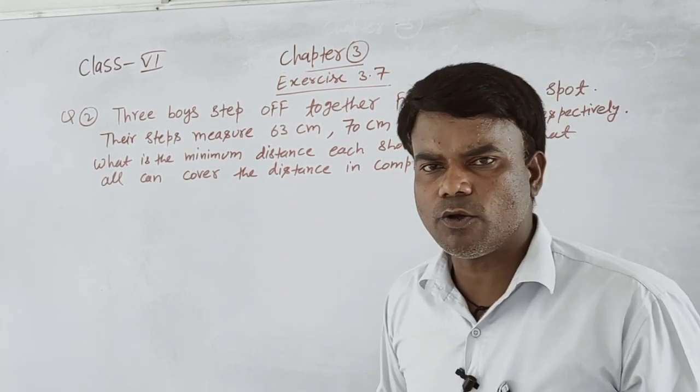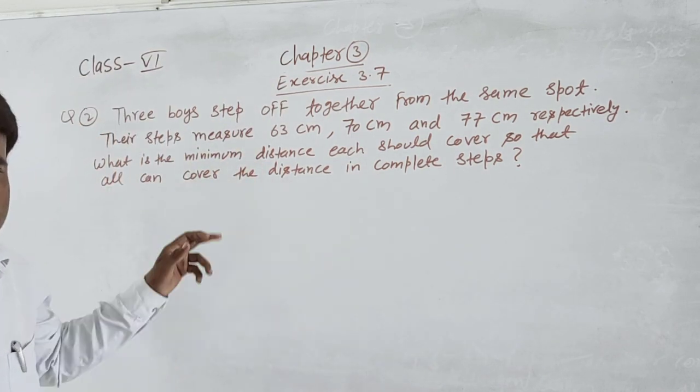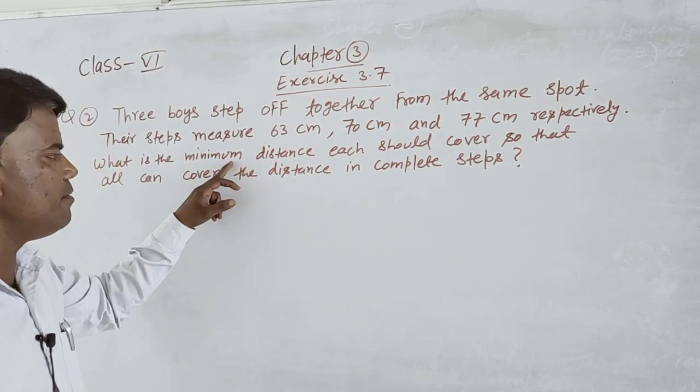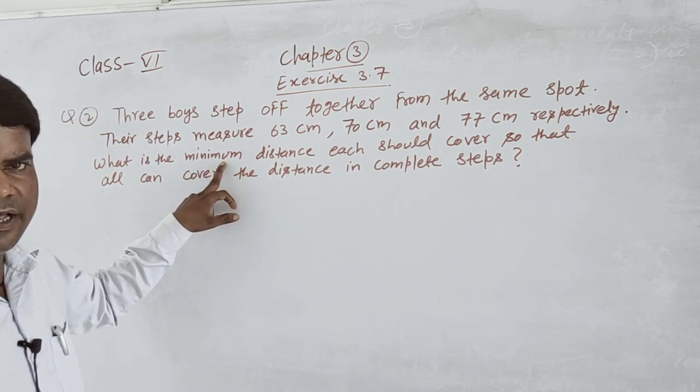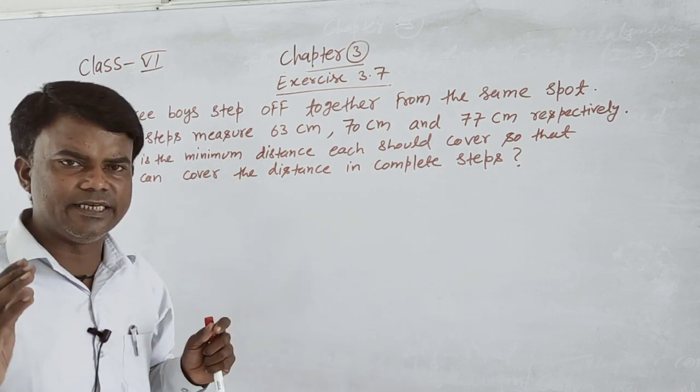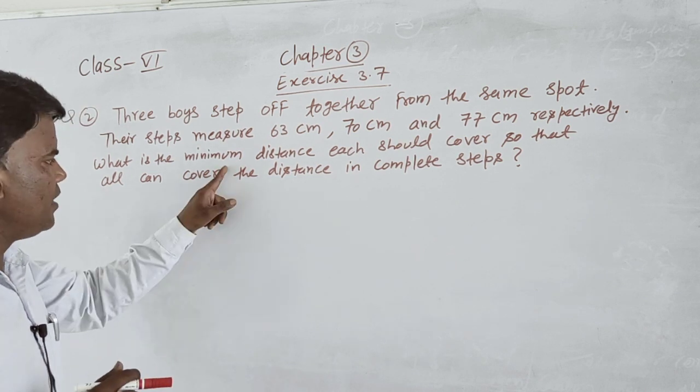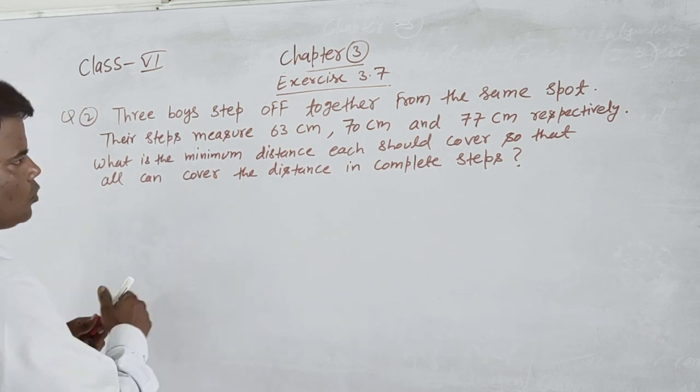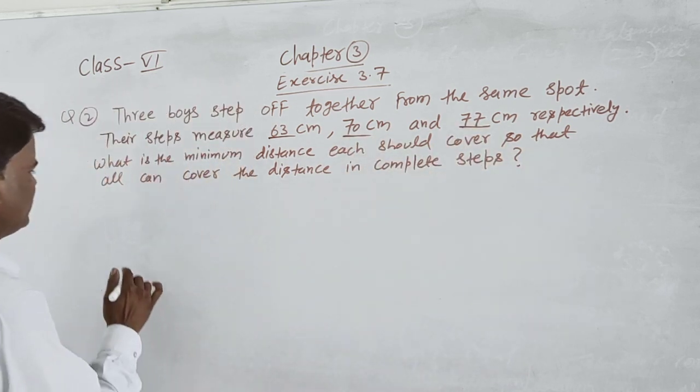This is the question we discussed earlier. We are going to find the LCM. To find the minimum distance, we need to calculate the LCM of the given numbers: 63, 70, and 77.